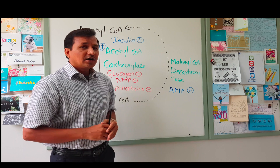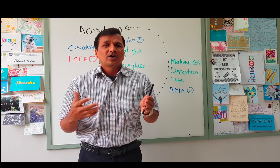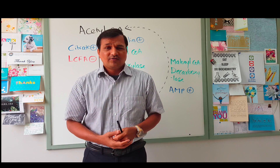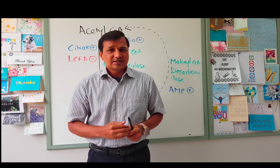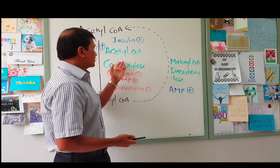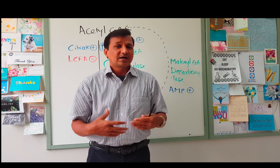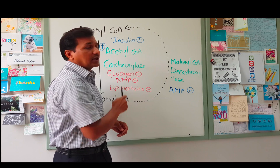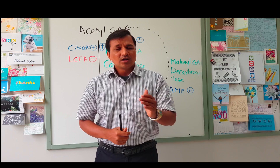Now let's look at hormonal regulation of acetyl-CoA carboxylase. When a person is in a well-fed condition, insulin is elevated. The main mechanism of insulin on enzymes is covalent modulation. Insulin activates protein phosphatase, which removes phosphate from the enzyme's surface. Acetyl-CoA carboxylase is active in its dephosphorylated form, and insulin keeps it in that dephosphorylated, active form.